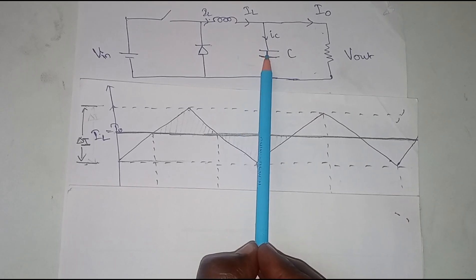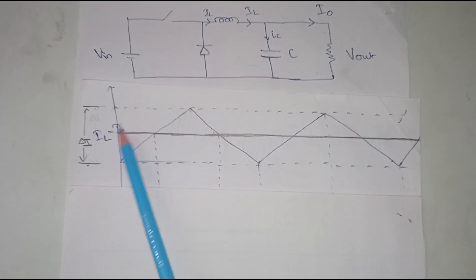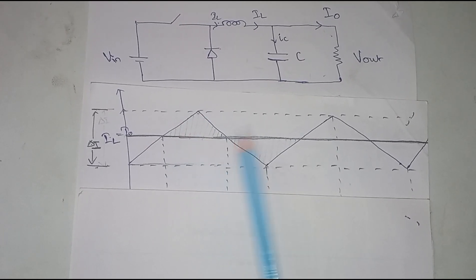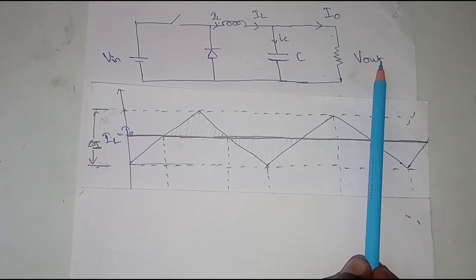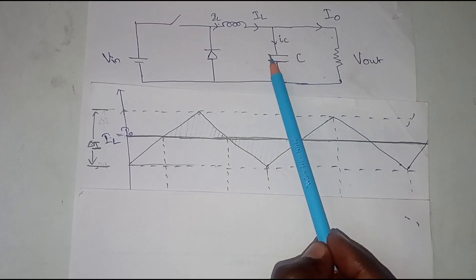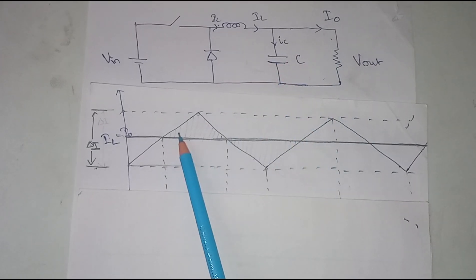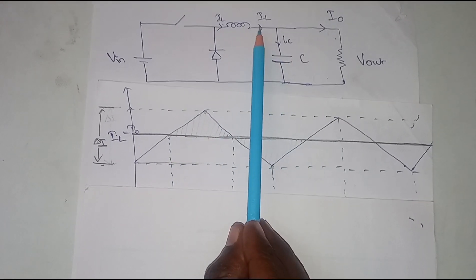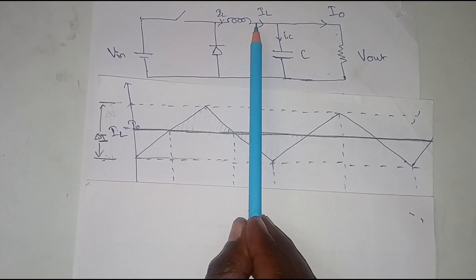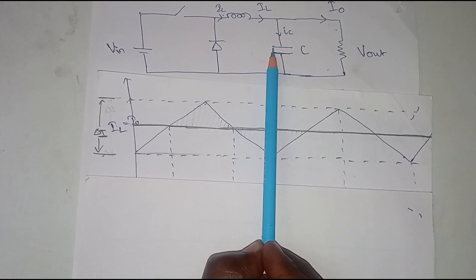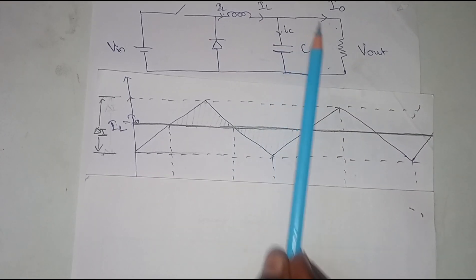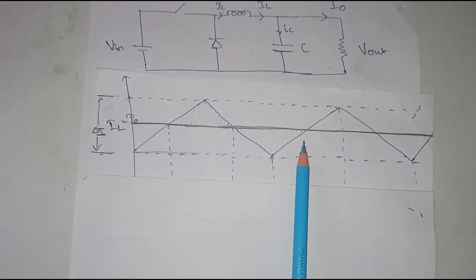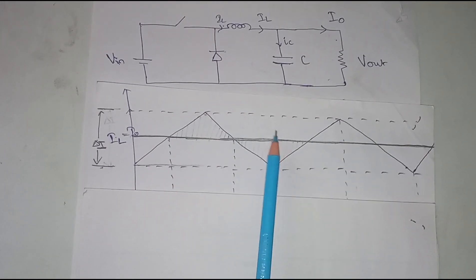All the current coming out of the inductor — some portion charges the capacitor, and the rest supplies the load. During the ramp-up phase, some current accumulates in the capacitor; when the output needs more current, it draws from the capacitor. In steady-state, the charging current and discharging current are equal, meaning the two triangles of the waveform are the same.